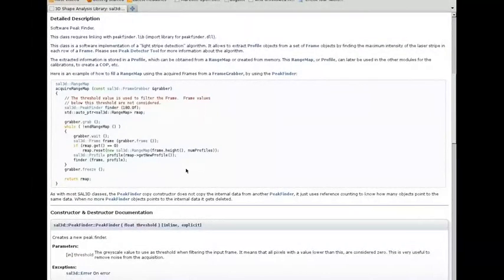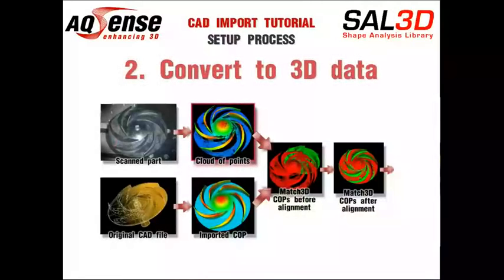Now that we have scanned the object, we will convert it to a metric cloud of points. To do that, we previously calibrated the system with the SAW3D metric tool. With that tool, no matter how we dispose the camera and the laser, we scan a known object, and it generates a file that stores all the parameters that can quickly transform any range map to a cloud of points in accurate metric units.